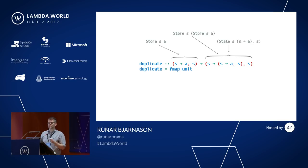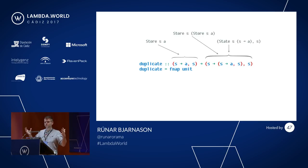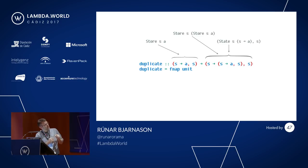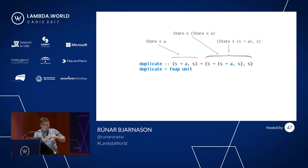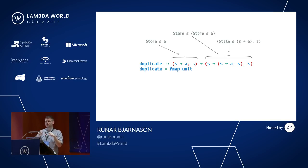We also get a duplicate for our comonad, which is the opposite of join. If we have a store full of A's, we can get a store full of stores, just by fmapping our unit across the outermost functor. Starting with a regular store with a current position S, we get a store full of stores where every store at every position has a cursor at that position — allowing us to look at the entire space of all possible positions.